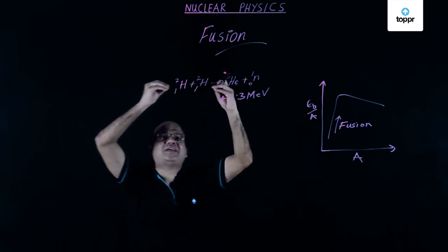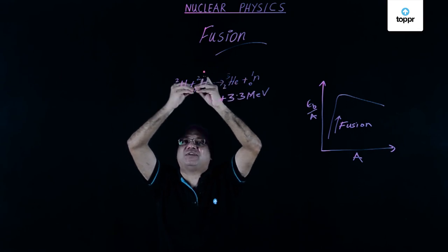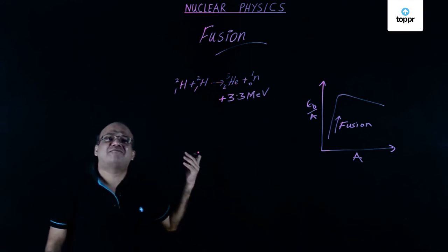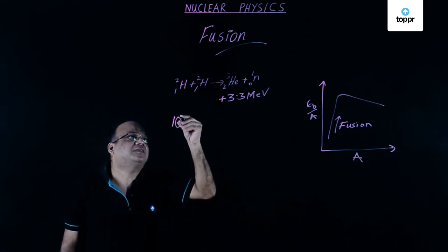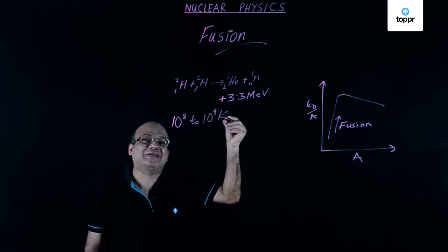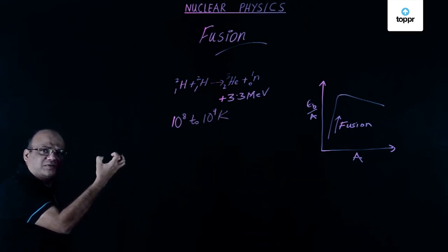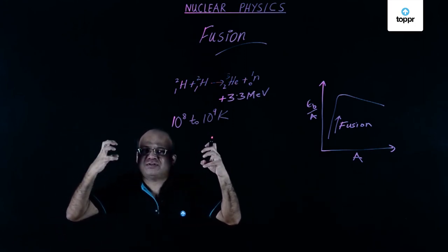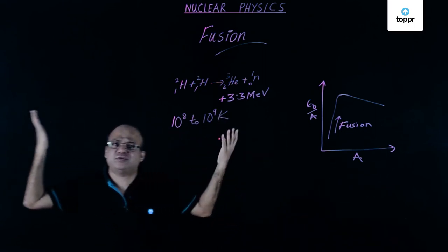These two deuterium nuclei will not combine easily because of the electrostatic force of repulsion between them. To make them combine we need a very high temperature — 10⁸ to 10⁹ Kelvin. On Earth we achieve this temperature by nuclear fission: you start a fission reaction, reach that temperature, and then fusion will start.